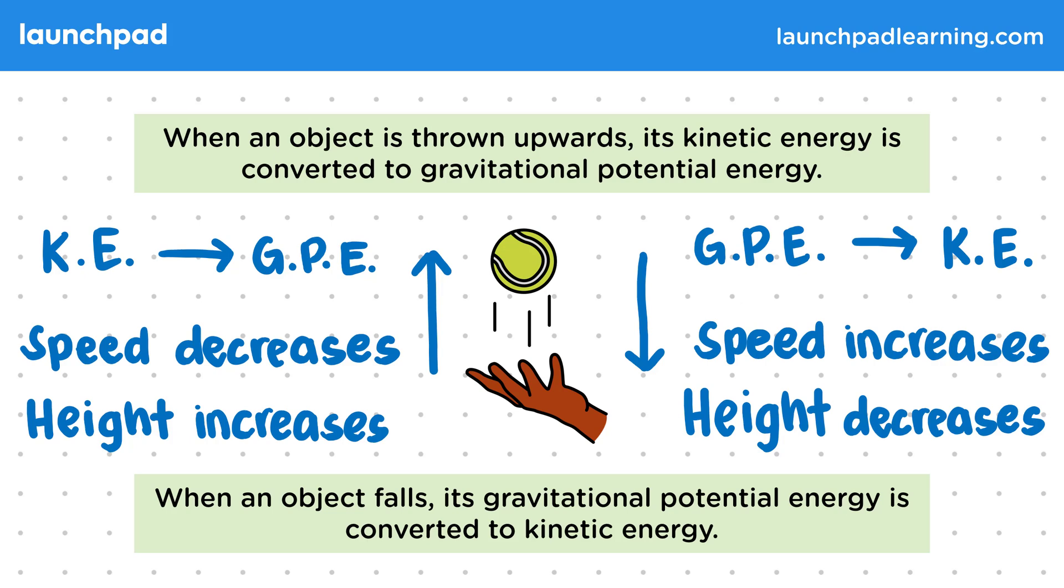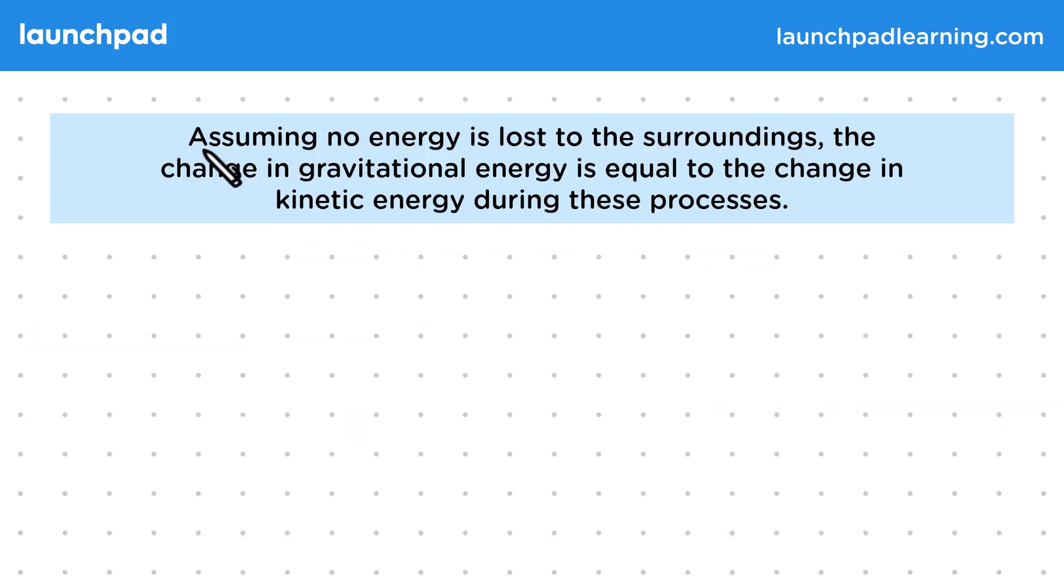So what can we say about the relation between these two types of energies? Assuming no energy is lost to the surroundings, the change in gravitational energy is equal to the change in kinetic energy during these processes.